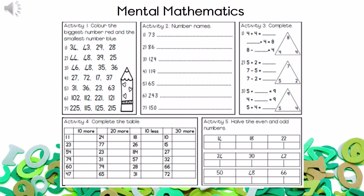Activity four: they give you a table. I'm going to do the first one as an example. They give me 11 and then say 10 more, so 11 plus 10 will give me 21. Then they give me 24 and say 20 more — 24 plus 20 will give me 44. Next, they give me 18 with 10 less, so 18 minus 10 will give me 8. The last one: they give me 10 and say 30 more, so 10 plus 30 will give me 40.